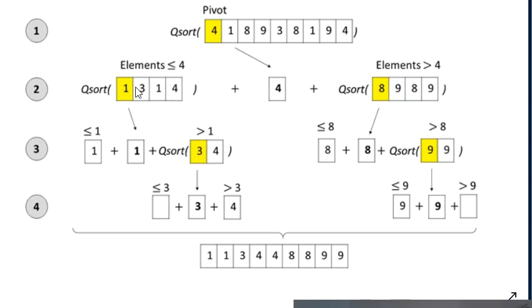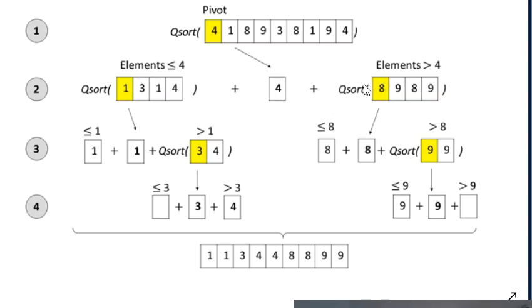Assuming our qsort routine returns the sorted list, we take that return value — the sorted left sublist — append it to our pivot element 4, then append the sorted right sublist of all elements larger than the pivot. Appending these three lists gives us a sorted list. With element 4 in the middle, all elements smaller than 4 are in sorted order on the left, all larger elements in sorted order on the right.